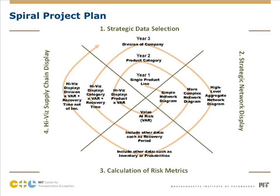Our project plan over a three-year period is to start very small the first year with a single product line and a very simple metric — value at risk. Year two, take on a product category with a more sophisticated metric including recovery period. Year three, get a division of a company with a more complicated network, perhaps adding inventory and probabilities to create a very valuable high-vis supply chain display for senior management.